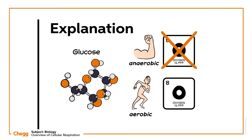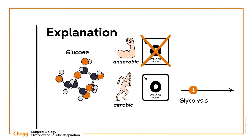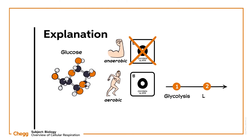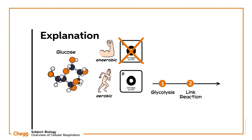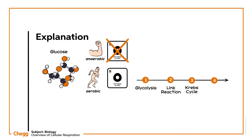In aerobic respiration, the metabolizing of glucose and energy production occurs in four stages: one, glycolysis; two, link reaction; three, Krebs cycle; and four, electron transport chain, sometimes referred to as oxidative phosphorylation.